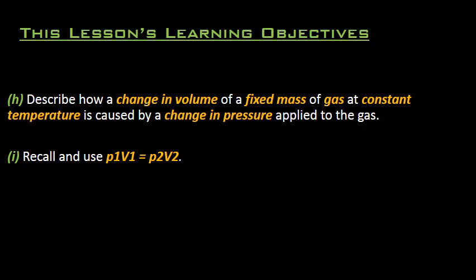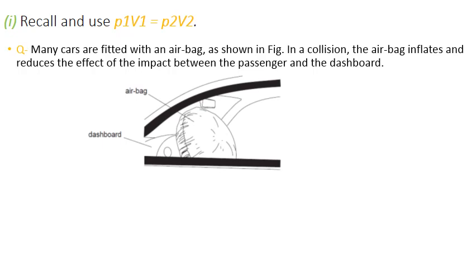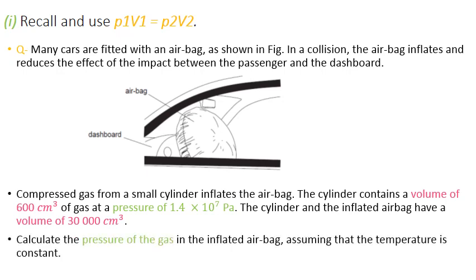Now is the time when we have to recall and use this equation in a numerical question. Here's the question from past papers. Here are the values which are given to us: compressed gas from a small cylinder inflates the airbag. The cylinder contains a volume of 600 centimeter cube of gas at pressure of 1.4 × 10^7 pascals. So this is the first volume value and the pressure value. After collision, the cylinder and the inflated airbag have a volume of 30,000 centimeter cube. What we need to find out is the pressure of the gas, assuming that the temperature is constant. That is very important thing in Boyle's Law.